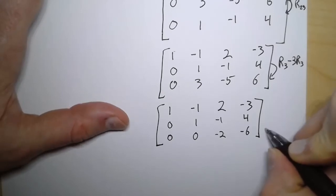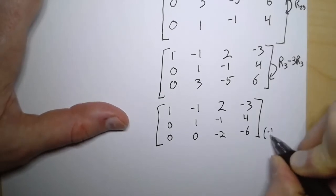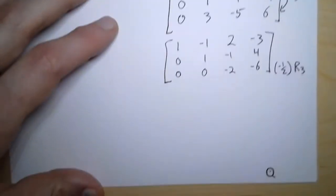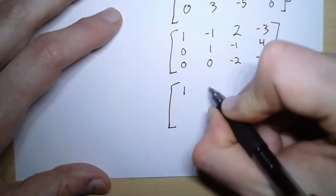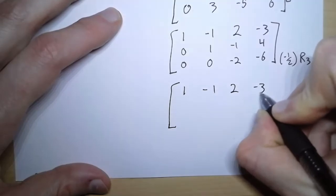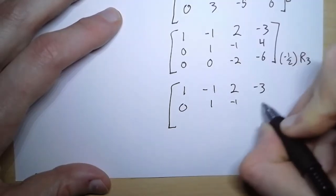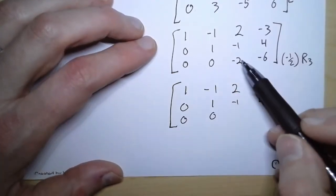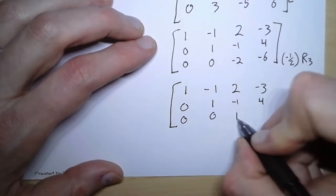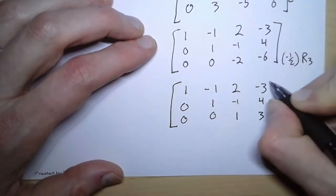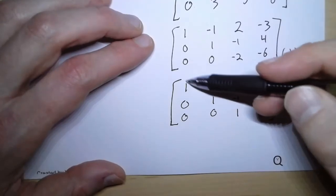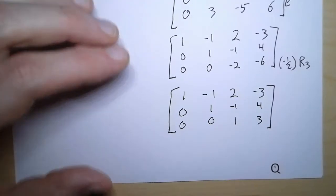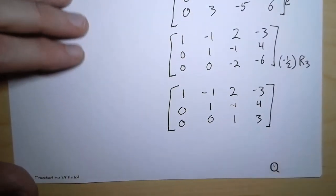All we have to do now is get this to be a 1. We're going to take row 3 and multiply by negative one-half. That's going to leave the first two rows unchanged: 1, negative 1, 2, negative 3; 0, 1, negative 1, 4. These are both zeros so they don't change. Negative one-half times negative 2 is 1. Negative one-half times negative 6 is 3. And there we go. We have ones in the diagonals and zeros beneath them. So we used row operations to get this into what we call row echelon form.